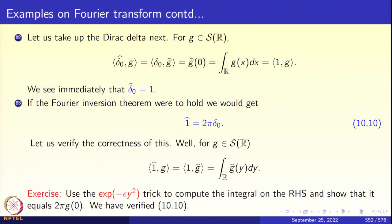Now let us take up the Dirac delta. What is its Fourier transform? By definition, delta-hat paired with G equals delta paired with G-hat. But delta paired with G-hat is simply G-hat evaluated at the origin, which is the integral of G(x) dx. But the integral of G(x) dx equals one paired with G — the constant function one regarded as a distribution. So delta-naught-hat paired with G equals one paired with G, hence delta-naught-hat equals one. The Fourier transform of the Dirac delta is the constant function one.